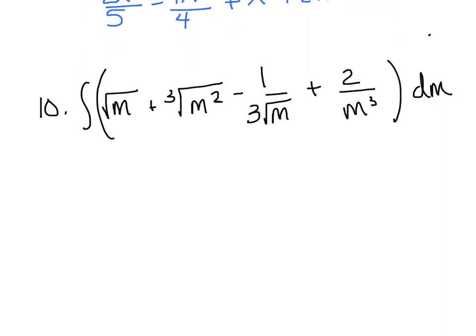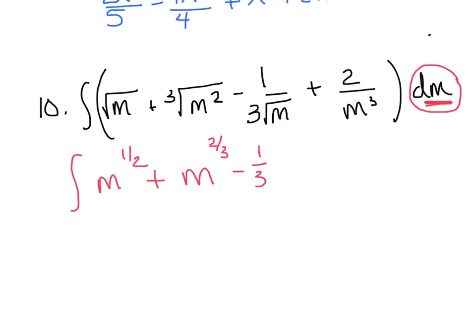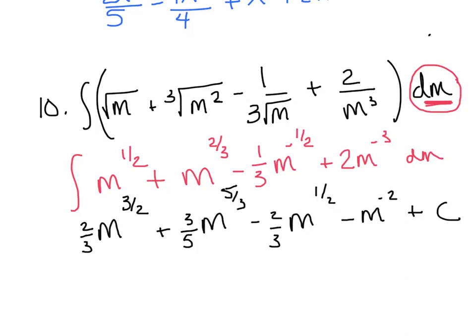Last question for the evening — stress that rewriting step. You'll notice there are m's in this one and dm at the end, just stressing the variable of integration. Rewrite as m to the 1 half plus m to the 2 thirds, then further as 1 third m to the negative 1 half plus 2m to the negative 1 third. If you can rewrite correctly, the integral is straightforward. Add 1 and don't forget the plus c — there's an infinite number of answers. That does it for basic integration rules.